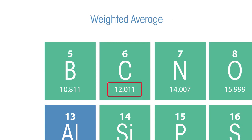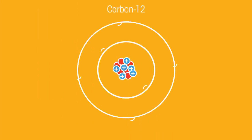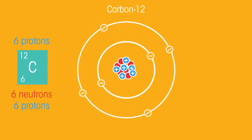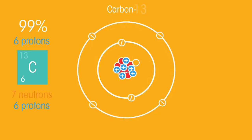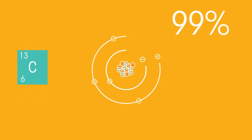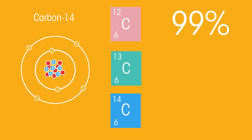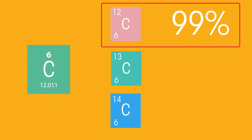If it's close to a whole number, that usually means there's only one common isotope. For example, around 99% of carbon atoms have six neutrons, which means about 99% of them have a mass number of 12. But around 1% have an extra neutron — we call this isotope carbon-13. And there is carbon-14, which is even rarer, with 8 neutrons. Because most carbon isotopes have a mass of 12, but some have 13 and even fewer have 14, this is why the mass number on the periodic table is just a little higher than 12.